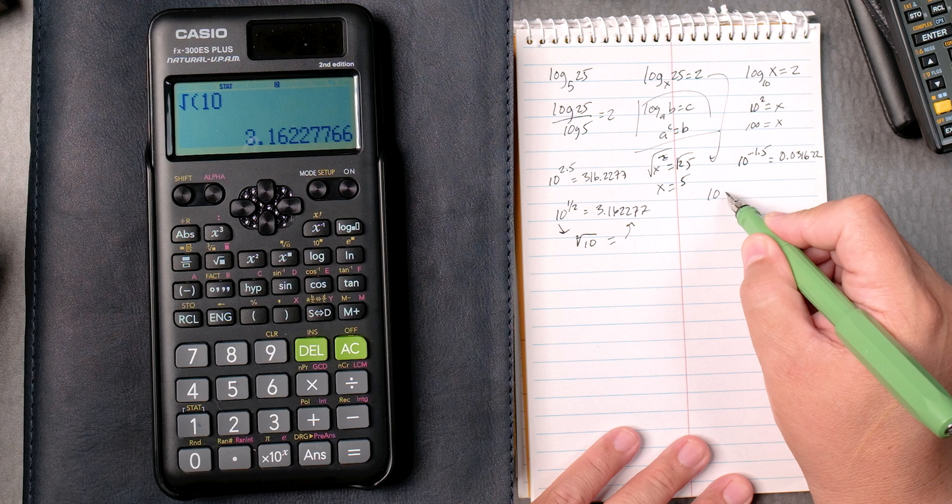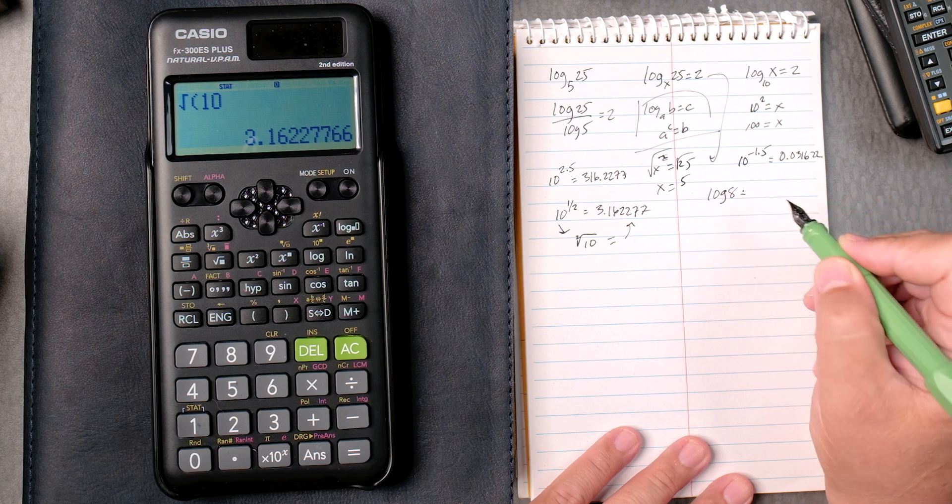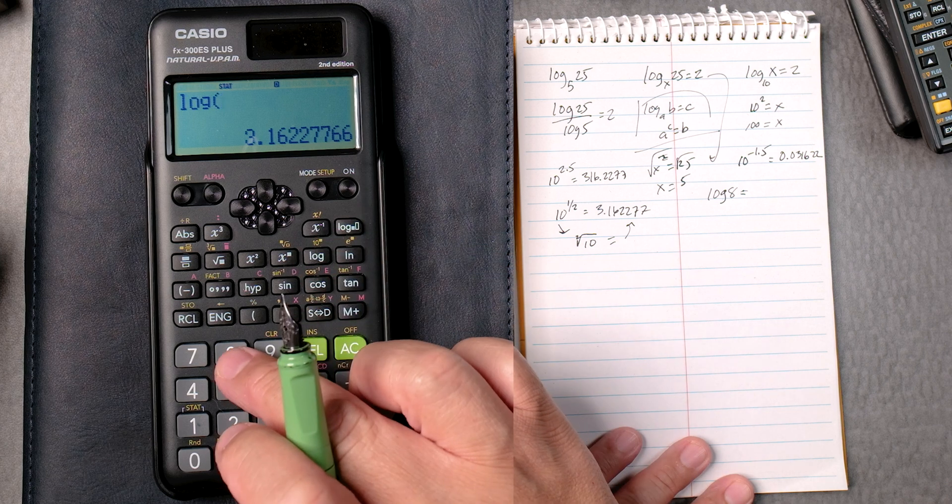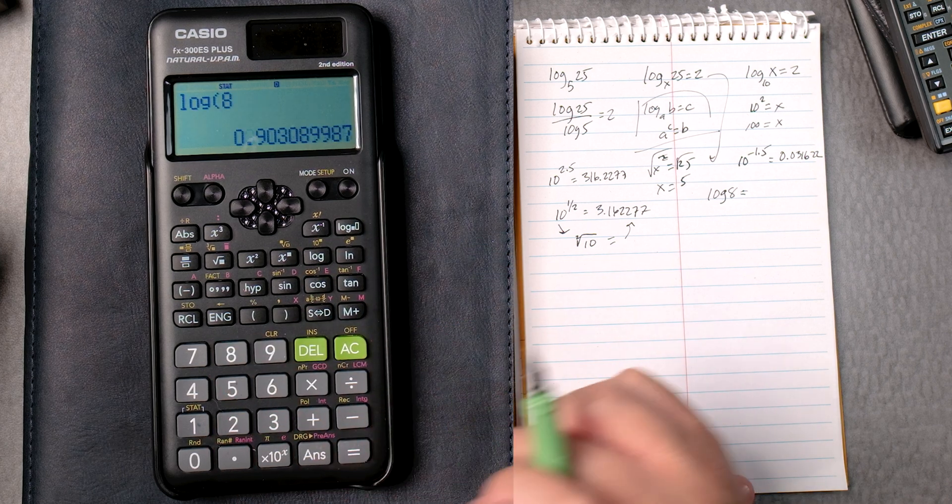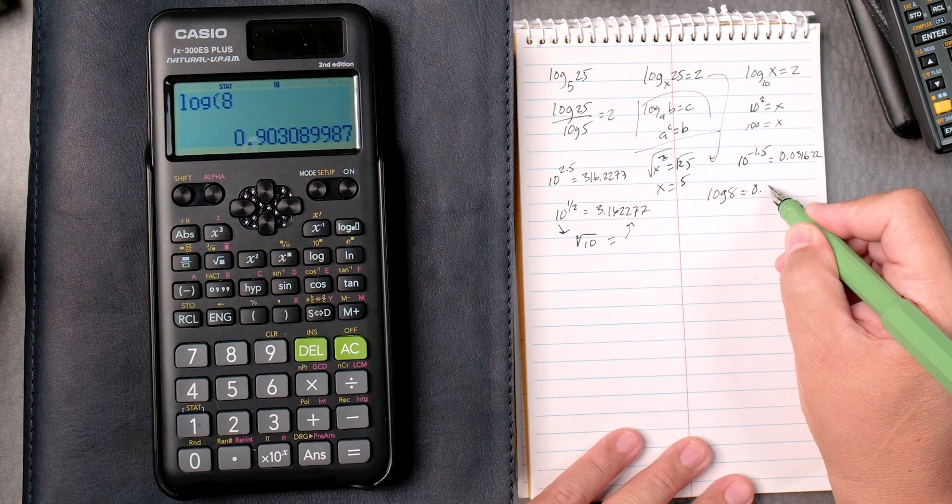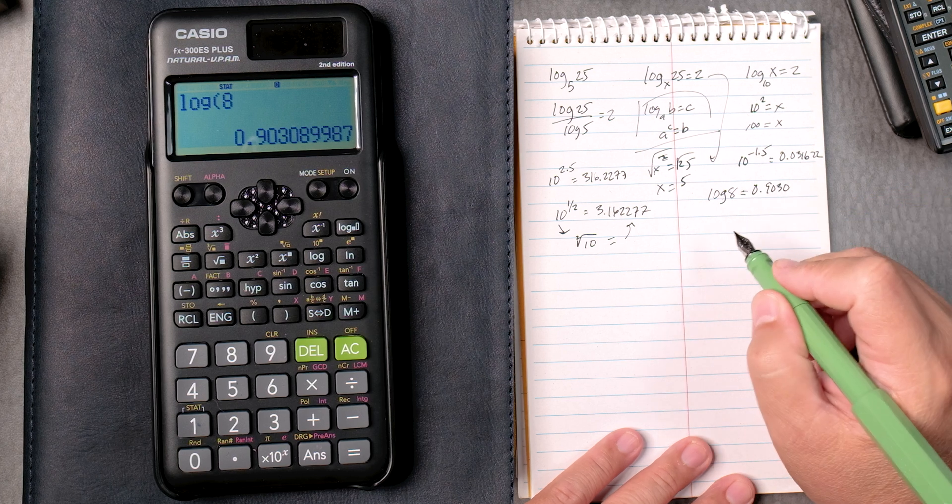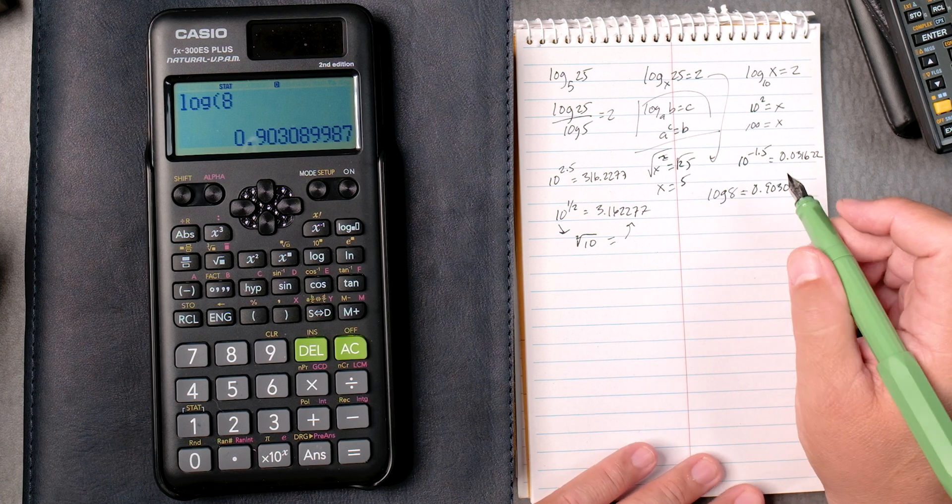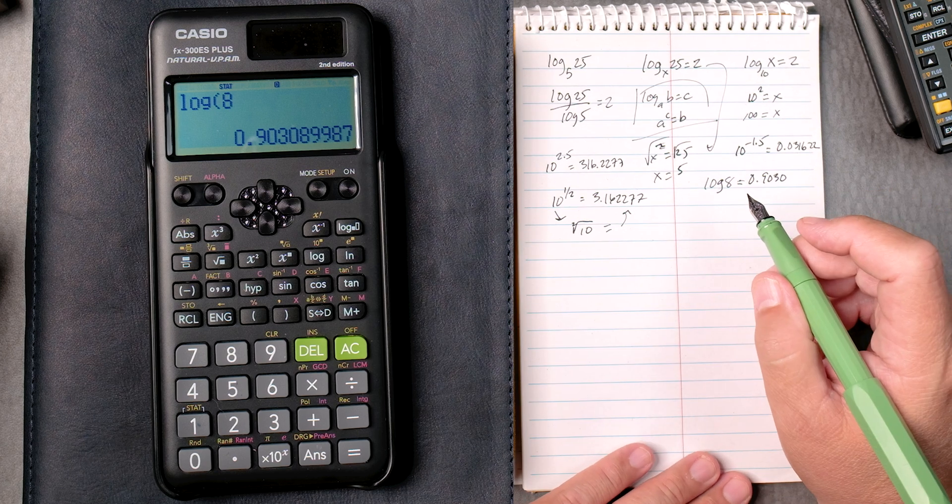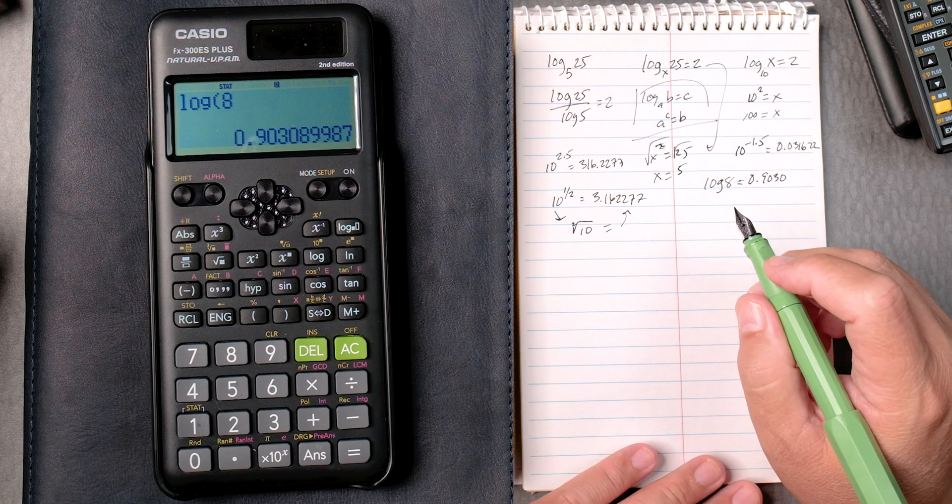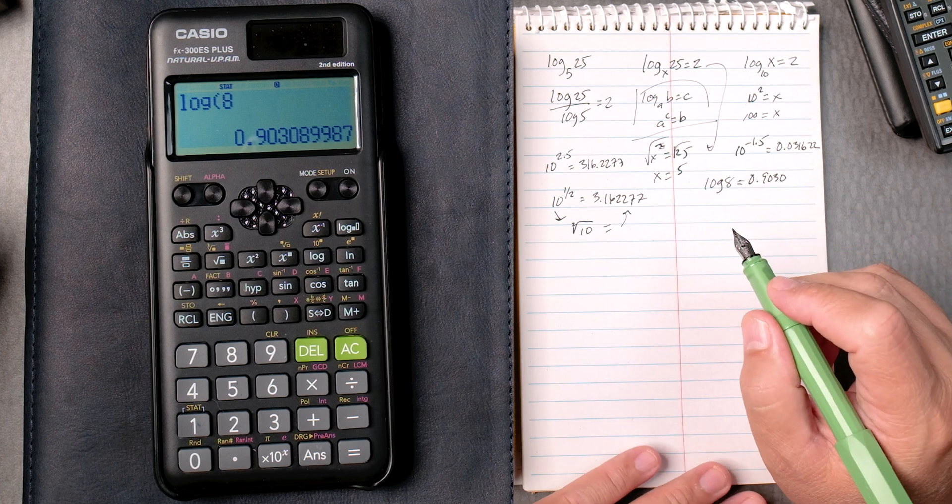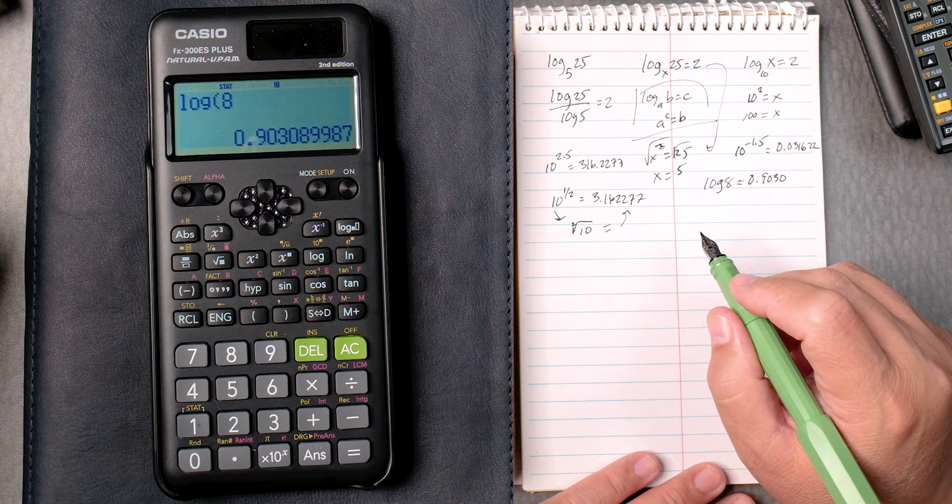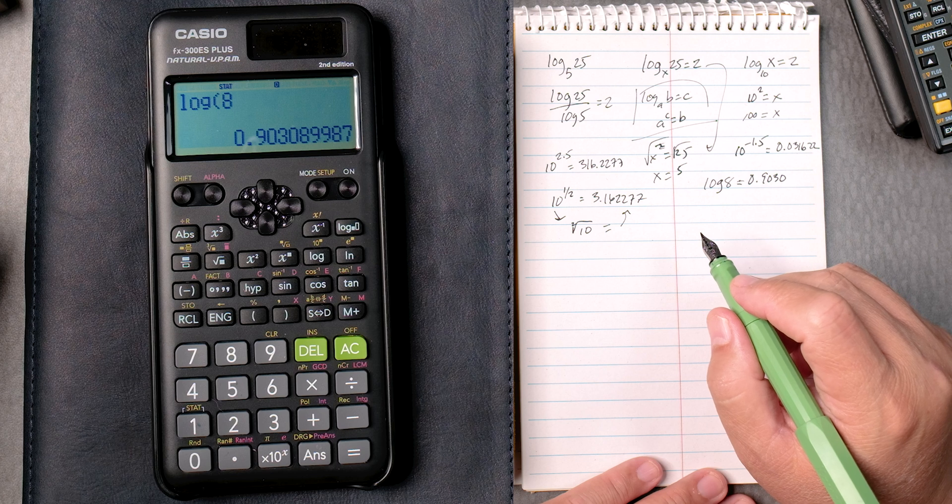What about the log of 8? Again, that's the base 10. That's what the calculator is. We take the log. We press 8. Press equals 0.9030. If this is going a little too fast for you, just pause the video, rewind it, and you'll be fine. Also, please subscribe. Please tell your friends. Please tell your teachers about this video. I would appreciate that.